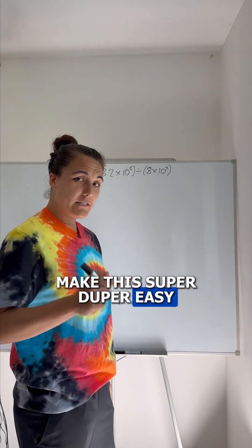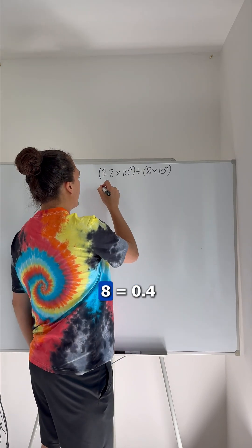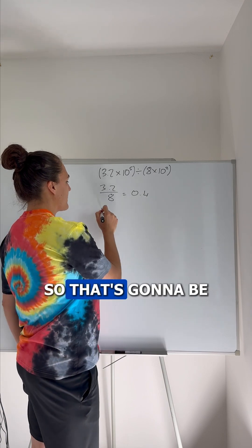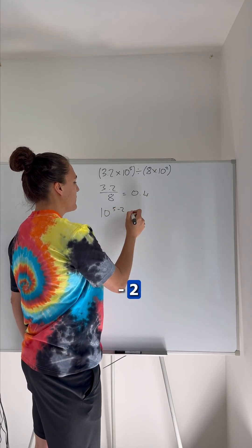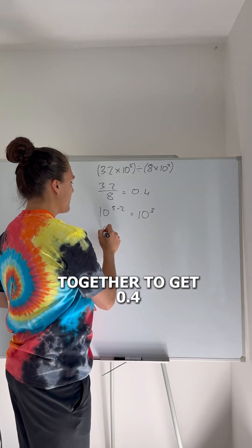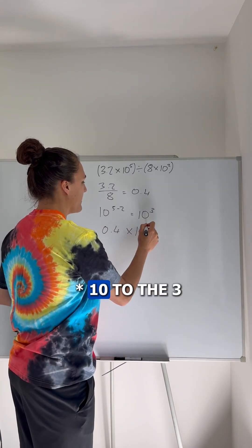To make this super easy, what you want to do is split the question in two. 3.2 divided by 8 equals 0.4. Then 10 to the 5 divided by 10 to the 2. So that's going to be 10 to the 5 minus 2, which equals 10 to the power of 3. Then we multiply them together. So we get 0.4 times 10 to the 3.